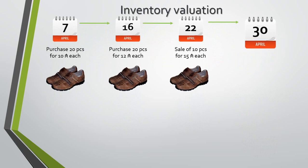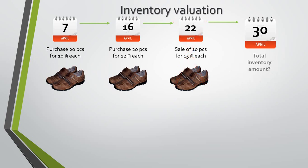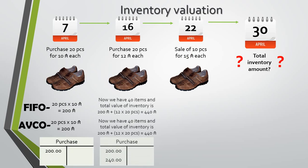If there were no sales, we could easily say that the value of our inventory is 448 ASE — the total amount which we paid to purchase these goods. But in this case, we made a sale and our inventory decreased in quantity by 10 pairs. The question is: by what amount should our inventory value decrease?